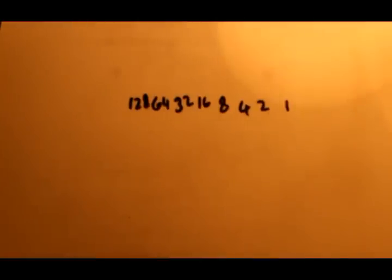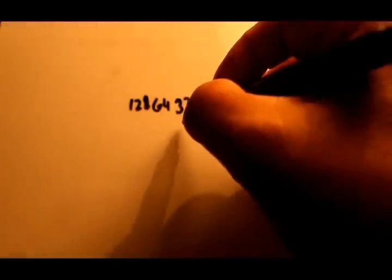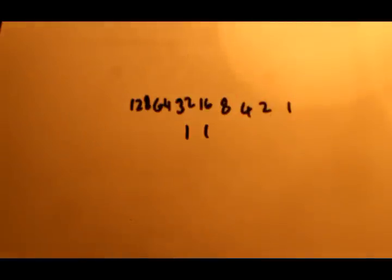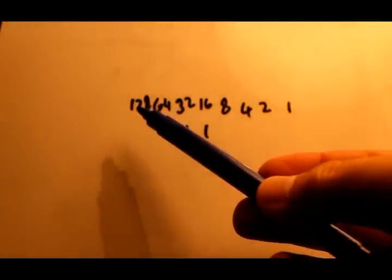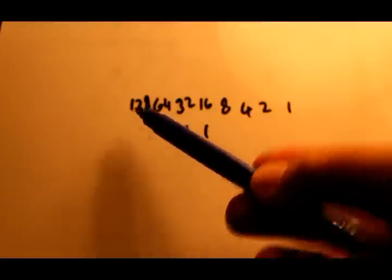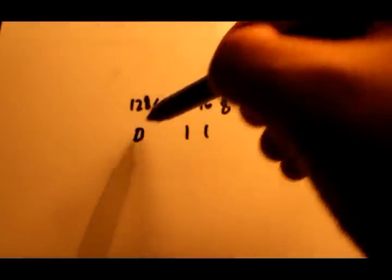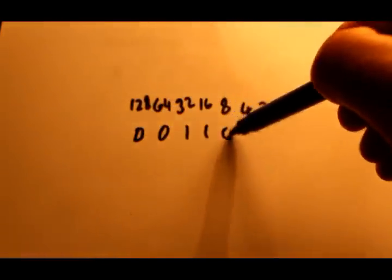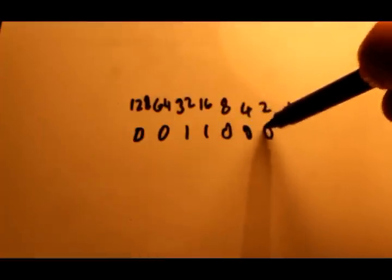My name is Steve Rigan and we're going to teach you about floating-point binary numbers. First of all, these are the place values for normal binary and we can represent a number like 48 simply by placing ones in the respective places. So in binary the number 48 would be, in 8-bit, 0 0 1 1 0 0 0 0.